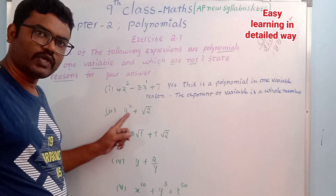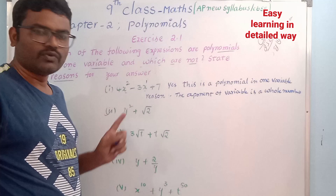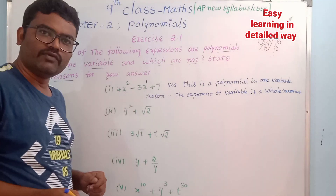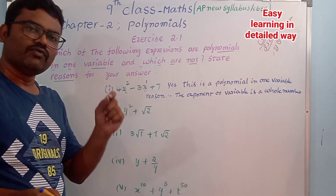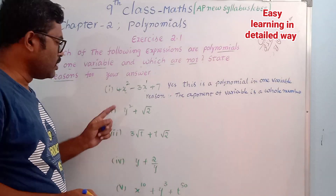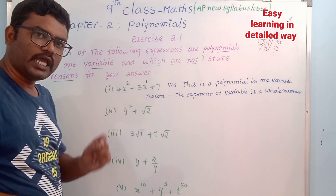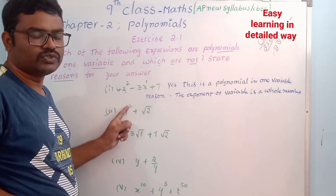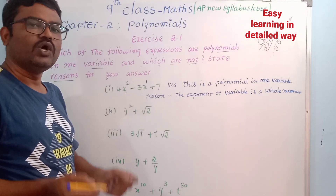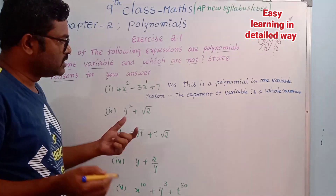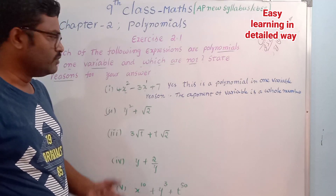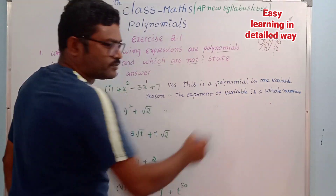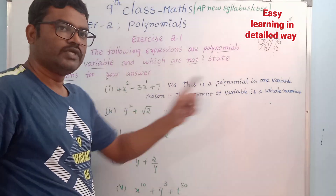Second one: y squared plus root. There is only one variable. The exponent of the variable is 2, which is a whole number. So this is also a polynomial in one variable.